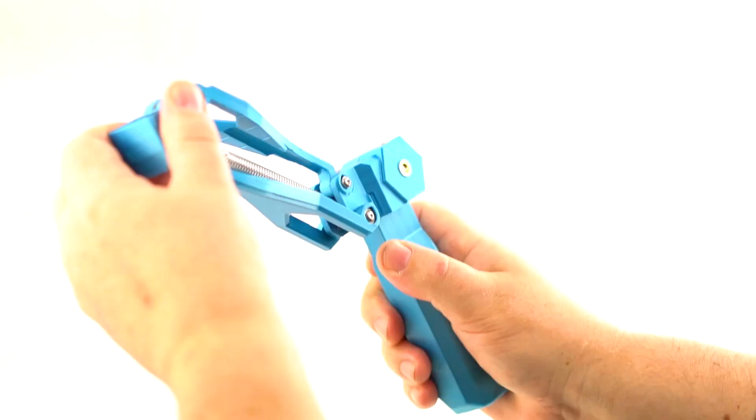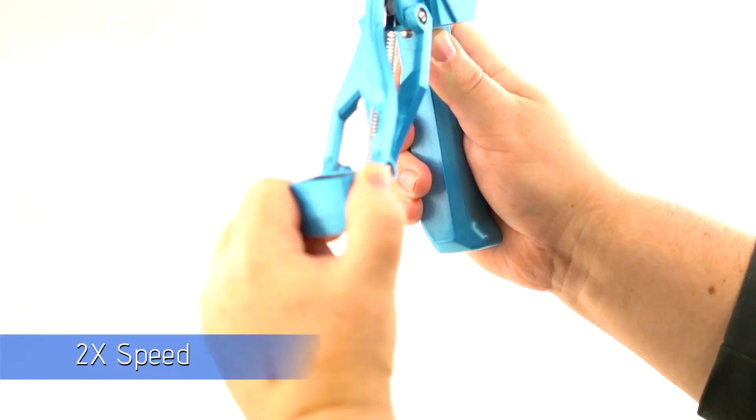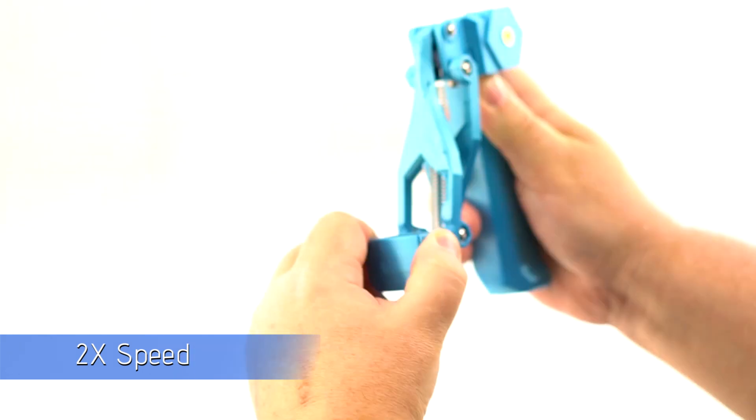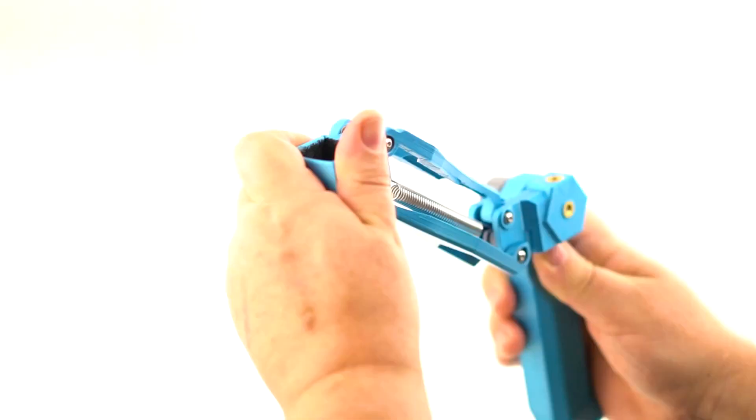So the first thing we can do is we can rotate it back and forth in our hands quickly for about 30 seconds to a minute. And gradually you might hear it going away.